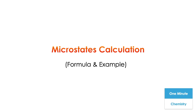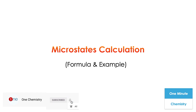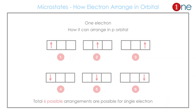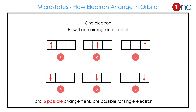Welcome to One Chemistry. This is the One Minute Chemistry series. We are going to quickly see microstate calculation — you will see the formula and examples. First, let us see what is a microstate. Microstates mean how the electrons are arranged in an orbital.